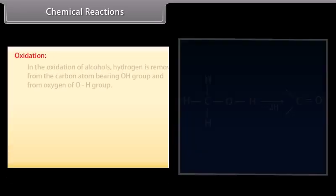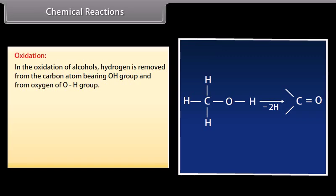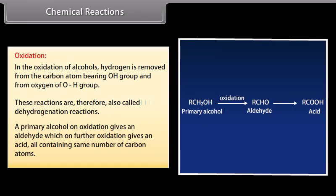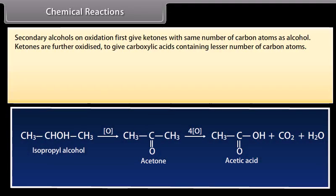Oxidation: in the oxidation of alcohols, hydrogen is removed from the carbon atom bearing the OH group and from the oxygen of the OH group. These reactions are therefore also called dehydrogenation reactions. A primary alcohol on oxidation gives an aldehyde, which on further oxidation gives an acid, all containing the same number of carbon atoms. Secondary alcohols on oxidation first give ketones with the same number of carbon atoms as the alcohol; ketones are further oxidized to give carboxylic acids containing a lesser number of carbon atoms.